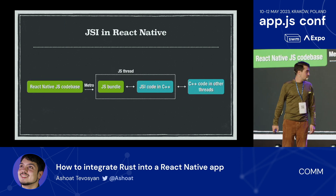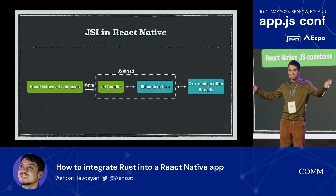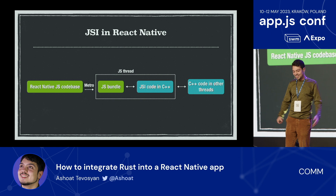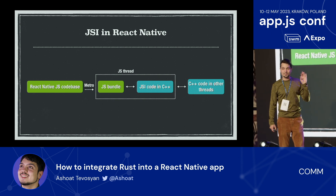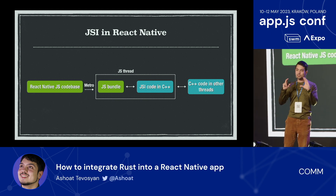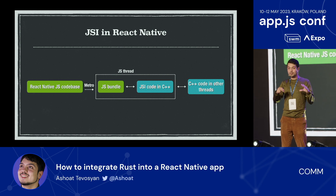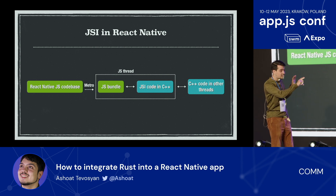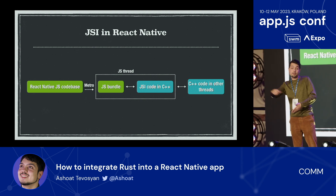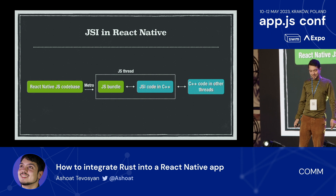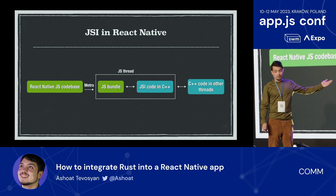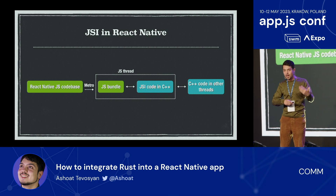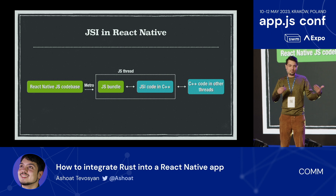Let's jump into how we use C++. Who here is familiar with JSI? The cool thing about JSI is that it lets you take the thread that's running the JavaScript in your code and run native code — in particular C++, which can call other languages. At Calm, we have a C++ thread for encryption, a C++ thread for networking, and a C++ thread for the database, so that we don't block the JavaScript thread and hurt user experience or app performance.